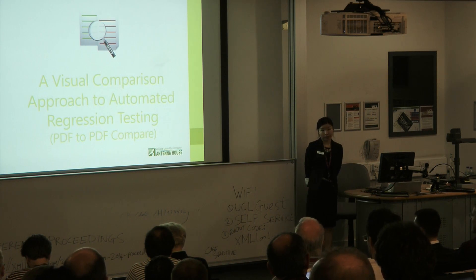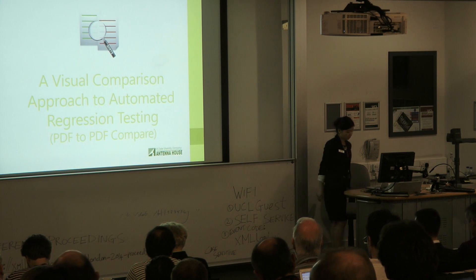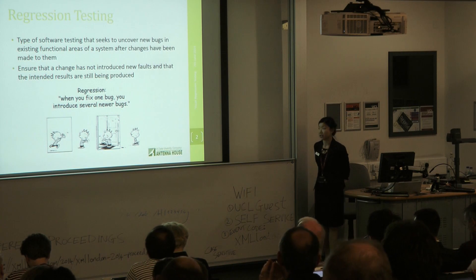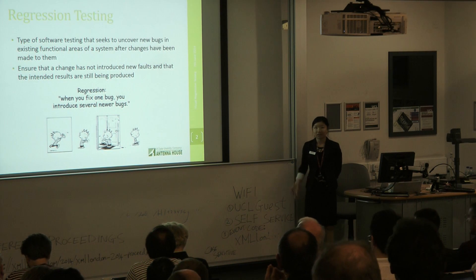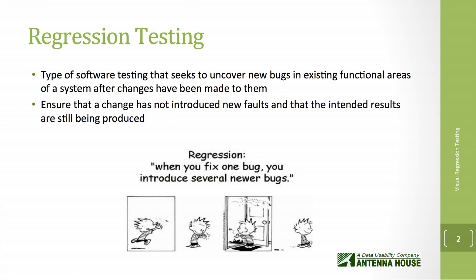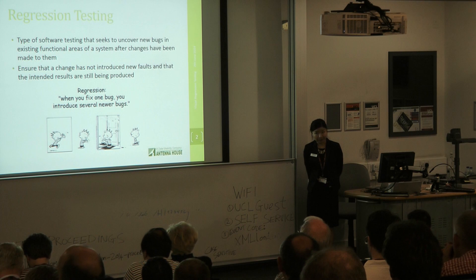Today I'm going to be talking about a visual comparison approach to automated regression testing. I know everyone in this room knows what regression testing is, as it's been mentioned in earlier presentations, but I just want to reiterate how important it is and define it generally for the purposes of this presentation. It's a type of software testing that seeks to find and uncover new bugs any time software has undergone any changes, new enhancements, or bug fixes. You want to test your software over and over again to make sure that the new features are working properly and that it hasn't corrupted any of the old features that were once working. This is a very crucial step in software development, often overlooked.